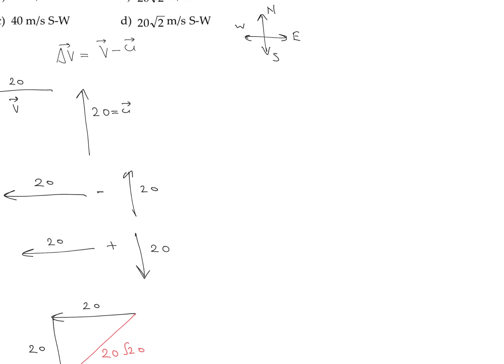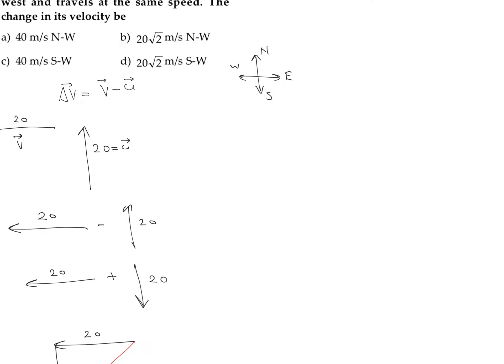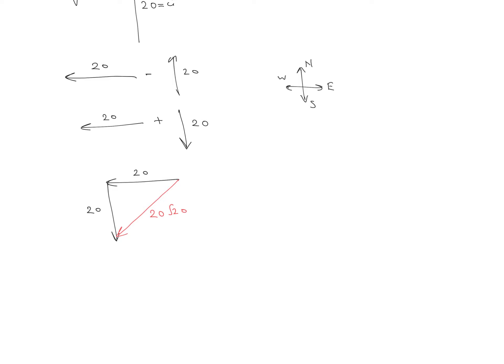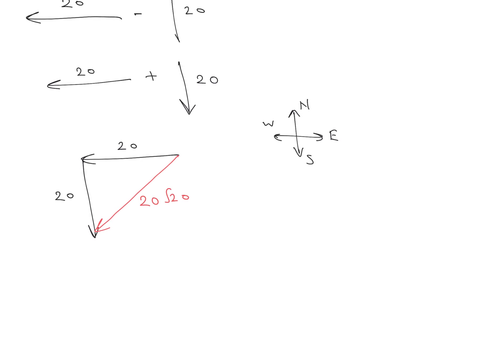We call it the southwest direction because of how we define our coordinate system—north, south, east, and west. The resultant vector is exactly between south and west, so we write the direction as southwest.